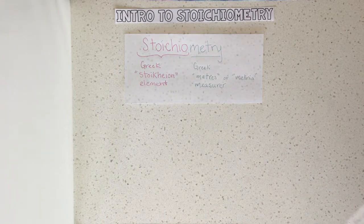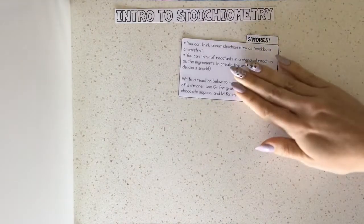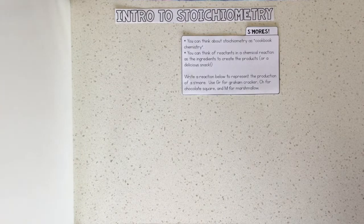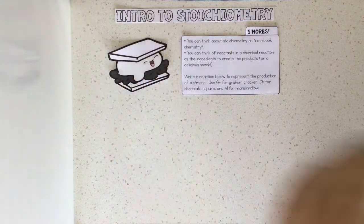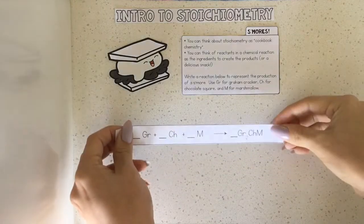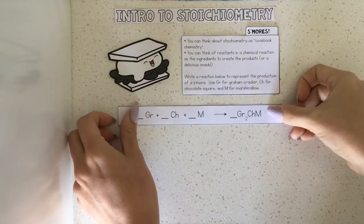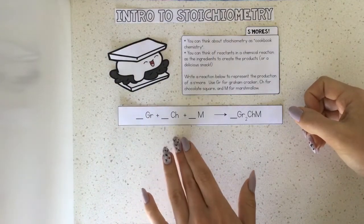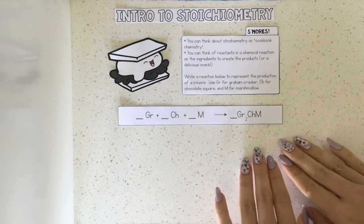You can think of stoichiometry as cookbook chemistry. You could think of the reactants in a chemical reaction as the ingredients to create the products — or a delicious snack. So we're going to write a chemical reaction to represent the production of s'mores. We're going to use Gr as the element for graham cracker, Ch for the chocolate square, and M for marshmallow. Here we have our chemical reaction with reactants — graham cracker, chocolate square, and marshmallow — and our product, the s'more.